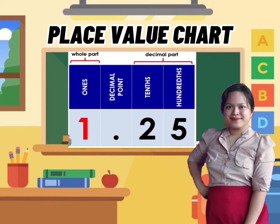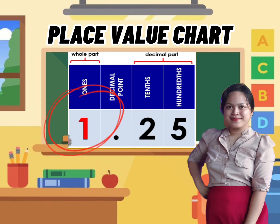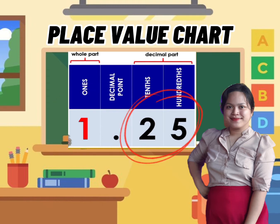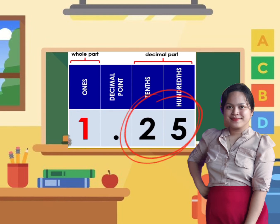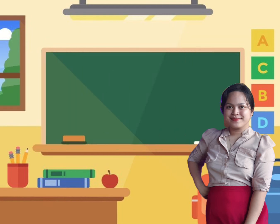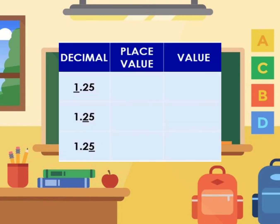As you can see on the place value chart, the whole number can be found before the decimal point, or at the left side of the decimal point, while the decimal part can be found after the decimal point.